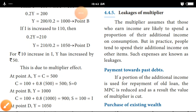Friends, if we look at the Multiplier, we look at the Assumption and Classification of Multiplayer. Leakage of Multiplayer. The Multiplayer assumes that those who earn income are likely to spend a portion of their additional income on consumption. The Multiplayer is an assumption.